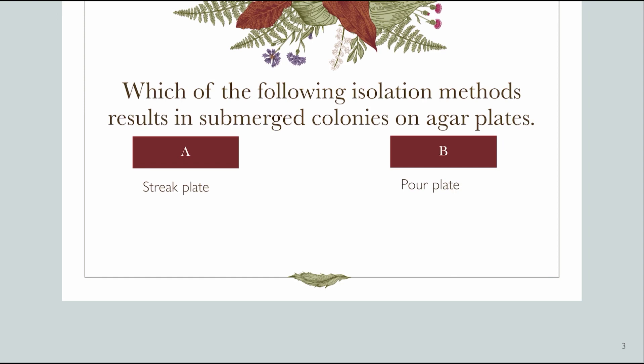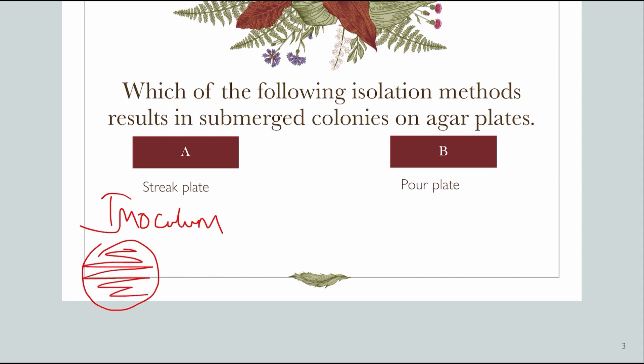The next question: which of the following isolation methods results in submerged colonies on an agar plate? Option A is streak plate. In the streak plate technique, an inoculum loop is used to streak the microorganism. A loopful of culture is streaked on a solidified agar plate. This method is used to get individual cells over the agar surface — on top of the already-solidified agar.